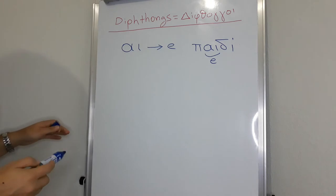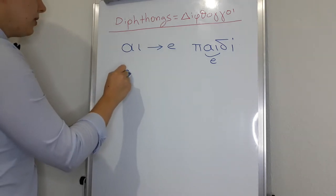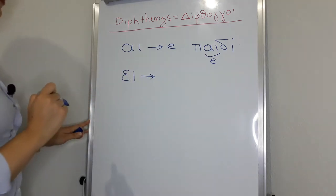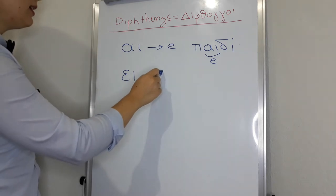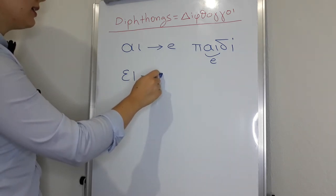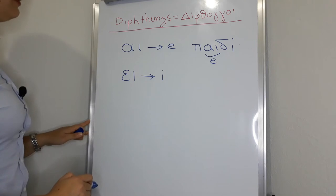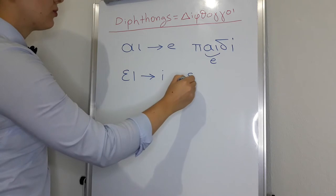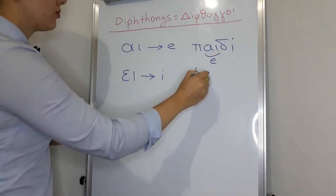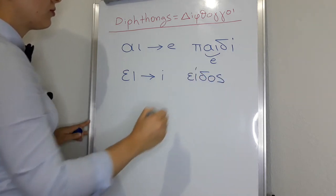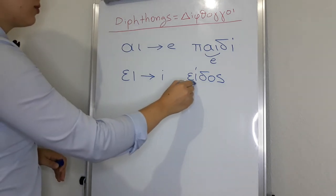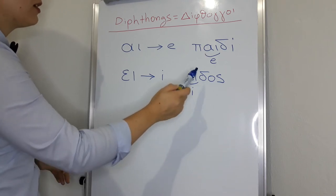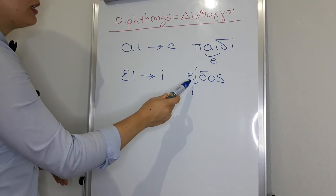Next is the diphthong epsilon yota. Epsilon and yota. This one is pronounced like e. For example, the Greek word idos. E. Two separate vowels, one sound. Idos. In English, kind.